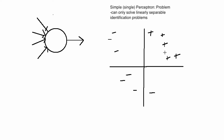Recall from our previous discussion: with the simple perceptron — here's the model — in this example we have four inputs and one output. The question was, mathematically, can we describe what kind of thing this can learn? We came up with this notion of what's called linearly separable.